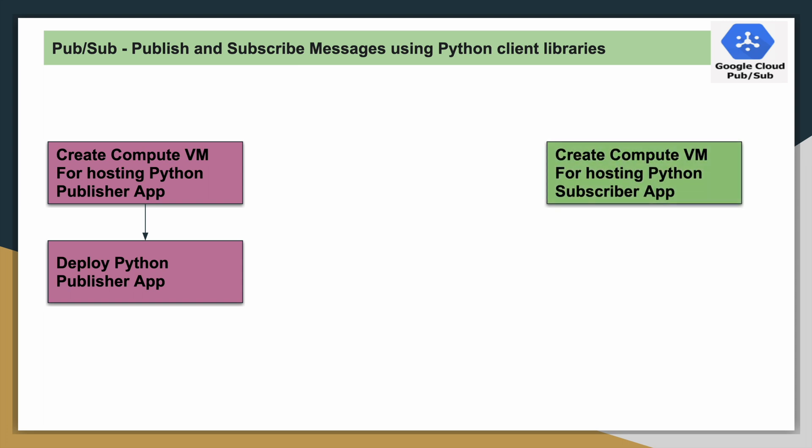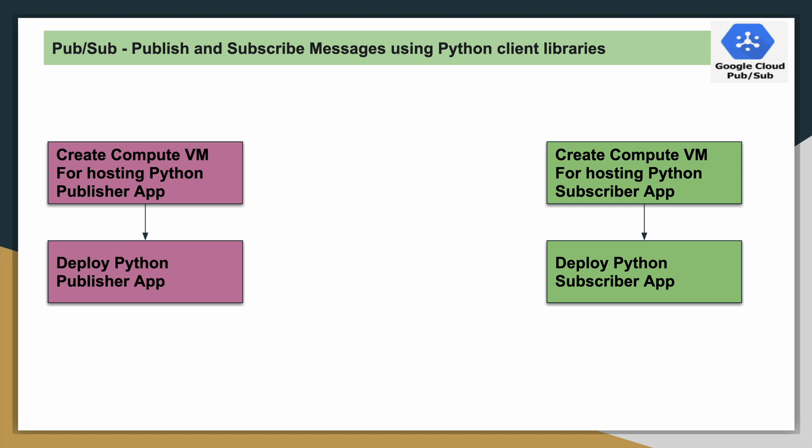In the same way we will also create one more virtual machine — we will call it as a subscriber. We will perform the same tasks: install the dependencies, install the PubSub API, and deploy our subscriber script.